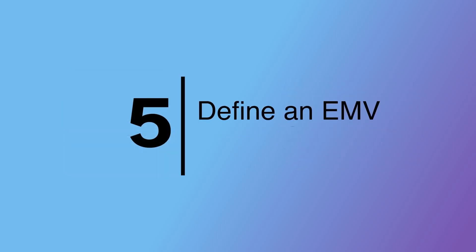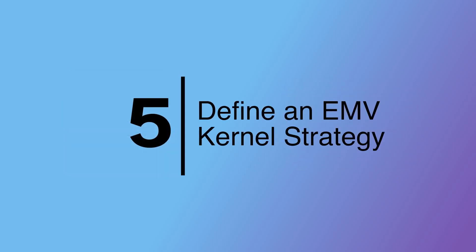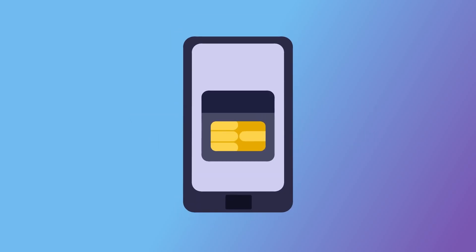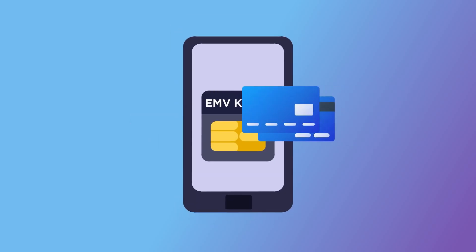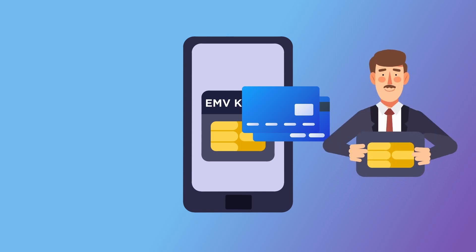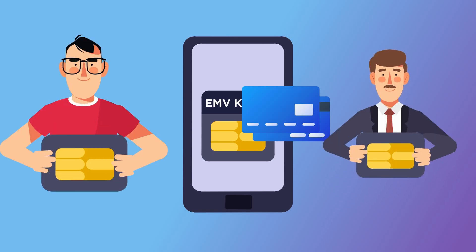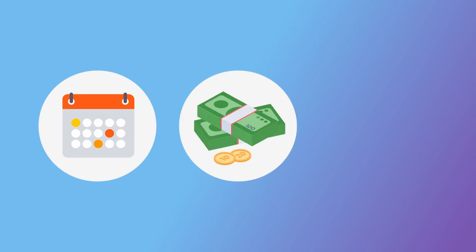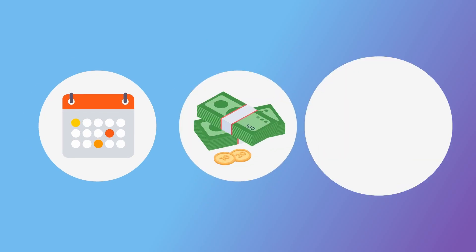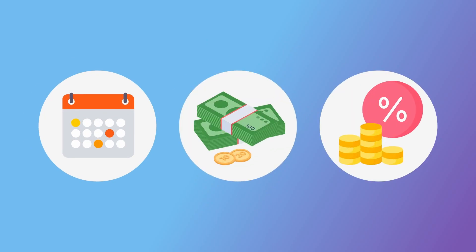Step 5: Define an EMV Kernel Strategy. The SoftPost application needs an EMV kernel that takes care of card interactions. You can use a third-party kernel or build your own. The choice depends on the desired time frame, initial budget, and long-term transactional fees.